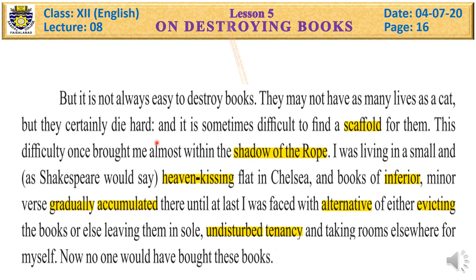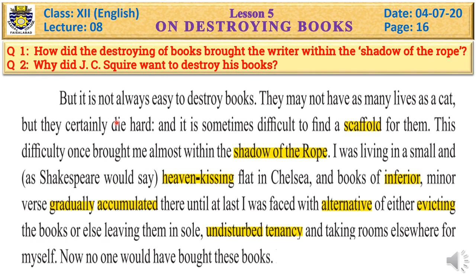In this part of the paragraph we will discuss two questions: how did the destroying of books bring the writer within the shadow of the rope, and why did J.C. Squire want to destroy his books? But it is not always easy to destroy books. They may not have as many lives as a cat, but they certainly die hard — they get a very difficult death.